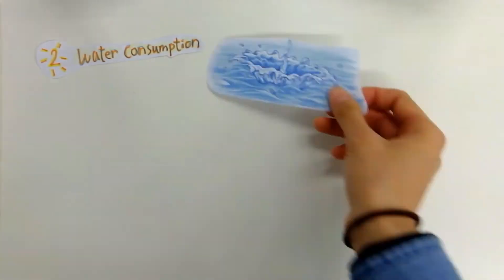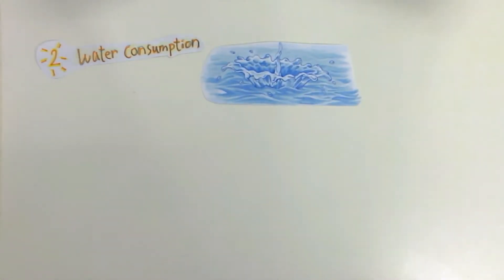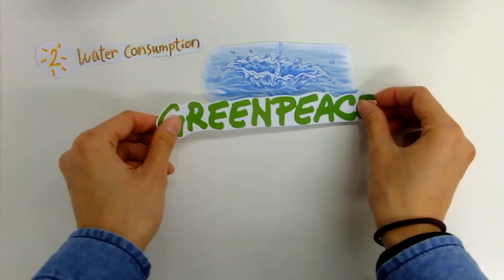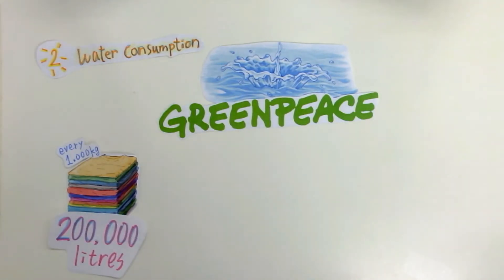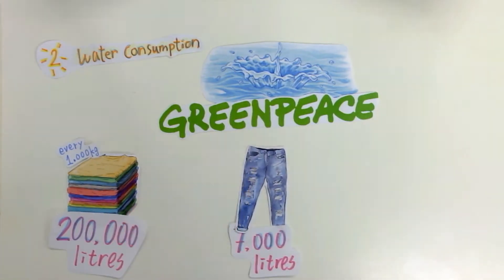The second impact is extensive water consumption for textile dyeing and finishing. According to Greenpeace, 200,000 liters of water is used for every 1,000 kg of textile produced, 7,000 liters for a pair of jeans, 2,700 liters for a t-shirt.